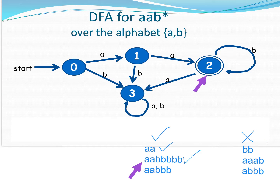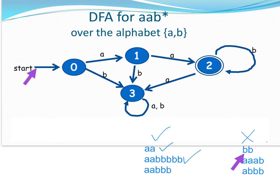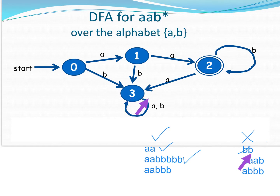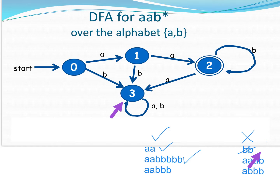Let's try with a string that's not in my language — let's try BB. We get set up at the start, at state zero. The first letter we see is a B, so we follow the B arrow. Then the next letter is also a B, so we follow the B loop. We reach the end of the string and check — we're not pointing at a double circle. So since we're not pointing at a double circle, we do not accept the string. BB is not in the language.